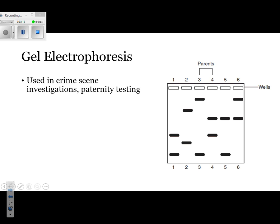Remember, you get half your DNA from your mom and half from your dad, so no one is going to be a complete match. I've highlighted the parents in green. What you want to see is at least one band from the mother and one band from the father in each sample. Potential child number 1 shares one band with the mother and one band with the father — therefore, subject number 1 is a child of those two.